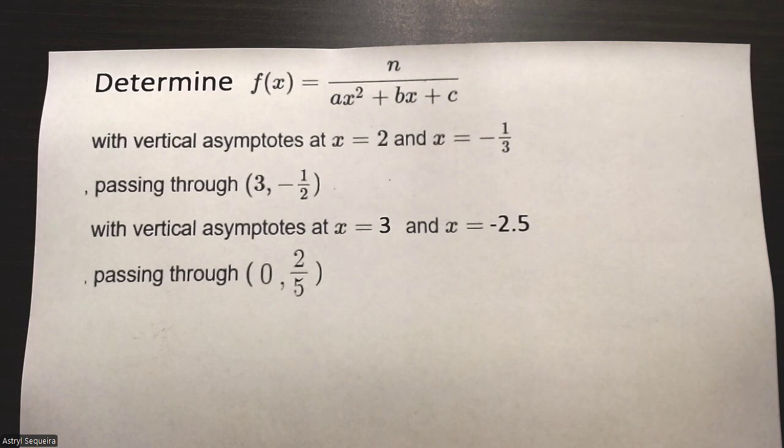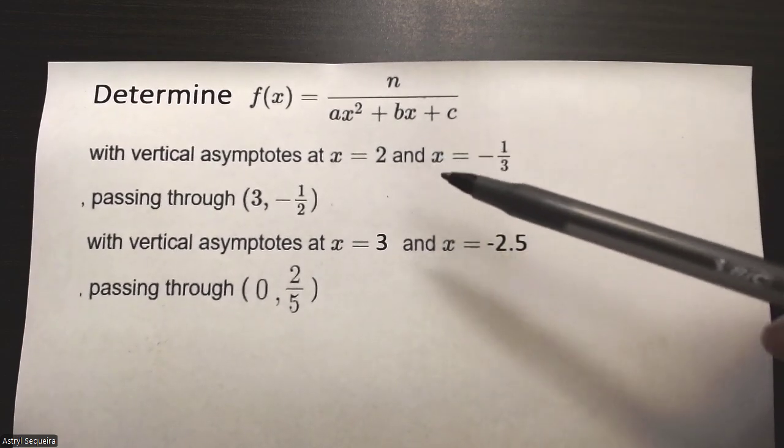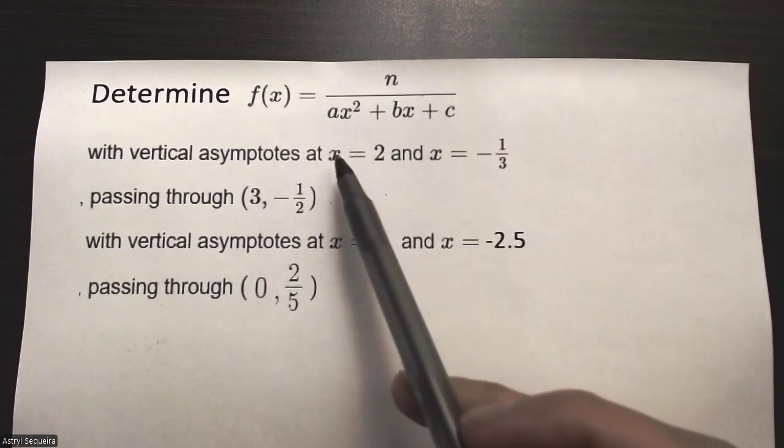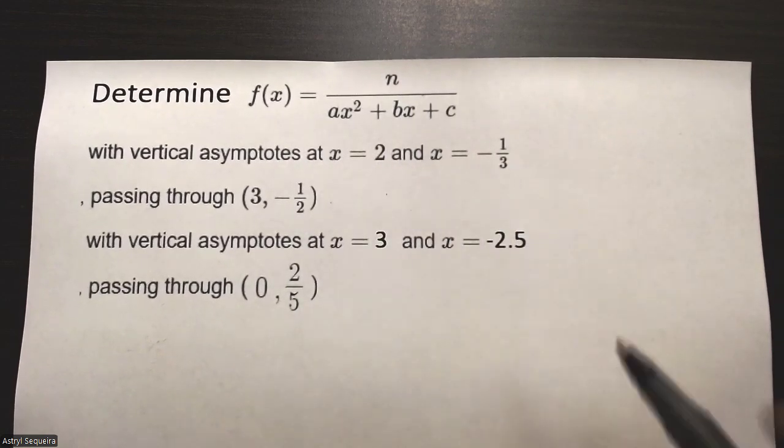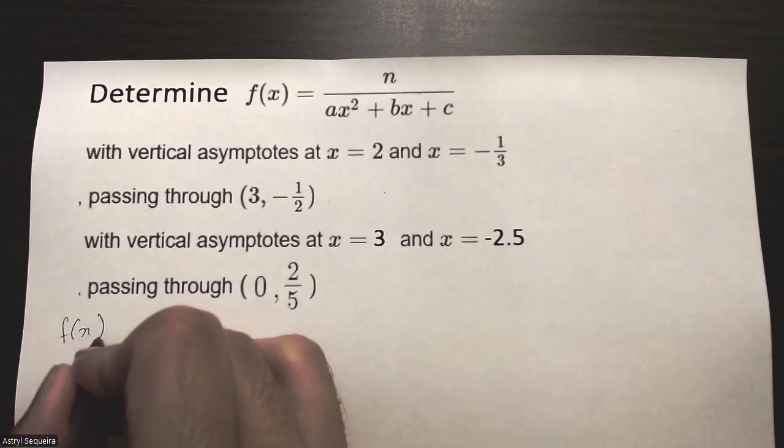So let's get started with the first example. The first thing we want to do in a question like this is replace the denominator with our vertical asymptotes. So let's start with f(x) equals